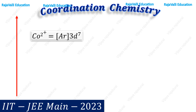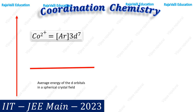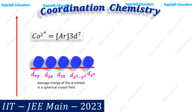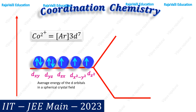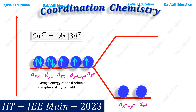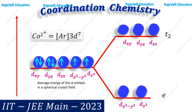This complex is tetrahedral in geometry, as already given in the question. This is the average energy of the d orbitals in the spherical crystal field, where electrons are filled according to Pauli's exclusion principle and Hund's rule of maximum multiplicity. The d orbitals split into E and T2 orbitals, where E is lower in energy and T2 is higher in energy. Electrons are also filled here according to Pauli's exclusion principle and Hund's rule.